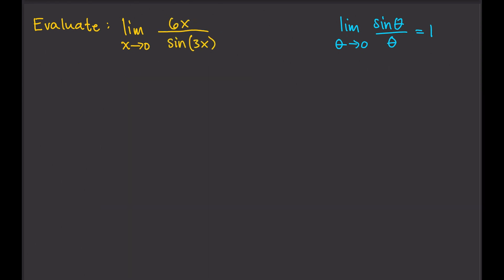Let's have another example. The limit of 6x over sine 3x as x approaches 0. So for this one, our sine is in the denominator. So what should we do?